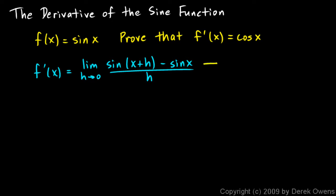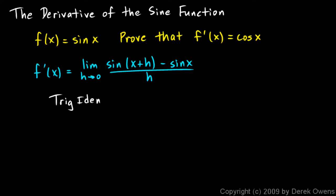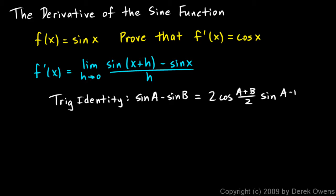To simplify this expression involving trig functions, we can use a trig identity. The identity I'm going to use is: sin(a) − sin(b) = 2·cos((a+b)/2)·sin((a−b)/2). This allows us to take the difference of two sines and turn it into a product. Even though it's rather complicated, it's a single term and it turns out to be useful in this case.